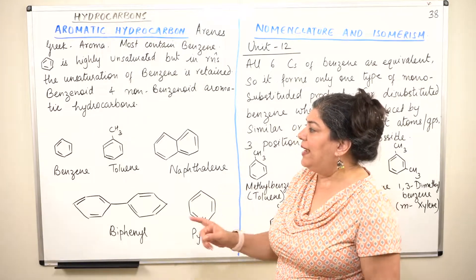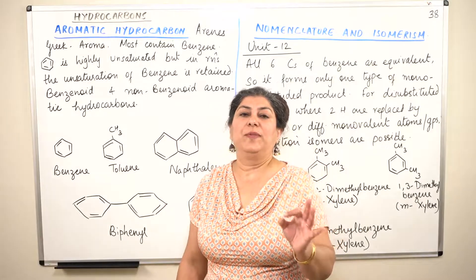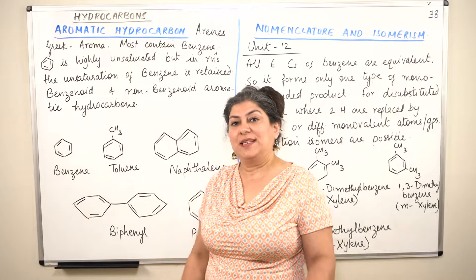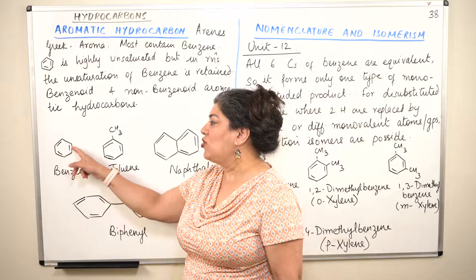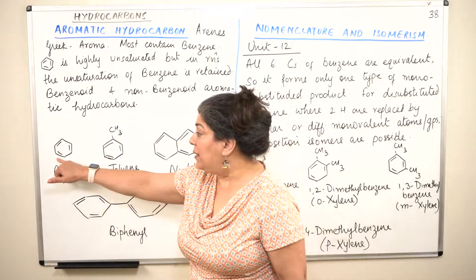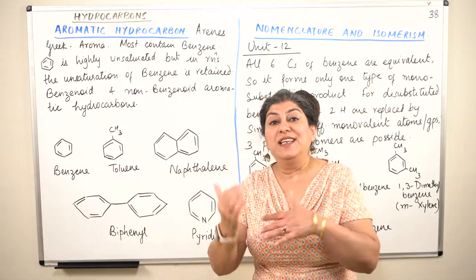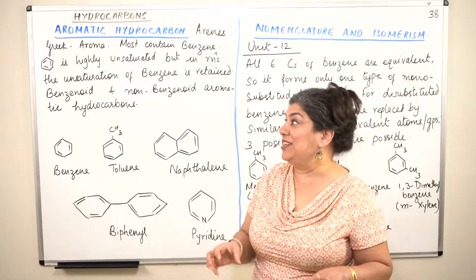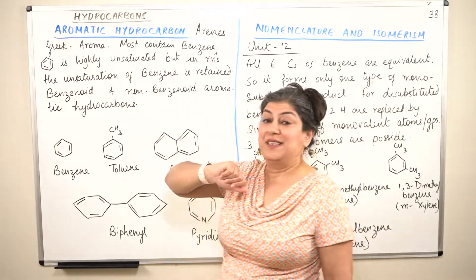If you look at the structure of benzene, benzene is the simplest aromatic hydrocarbon. It consists of six carbon atoms with alternating double bonds — one double bond, one single bond, double, single, double, single — so it has alternating double and single bonds. Therefore it is highly unsaturated; it is a six-carbon ring.